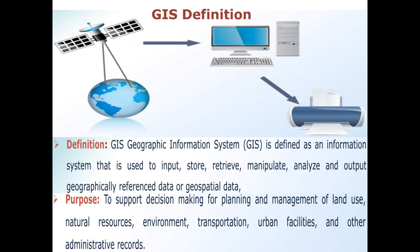We discussed what GIS is, and now we have to look into what is the purpose of GIS. The purpose of GIS is to support decision-making for planning and management of land use, natural resources, environment, transportation, urban facilities, and other administrative records.